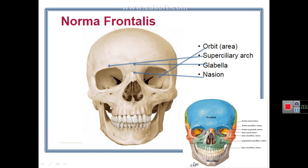The bones forming the norma frontalis are the frontal bone (a single bone), the right and left zygomatic bones, the right and left maxillae, the right and left nasal bones, and the mandible. To study features of the norma frontalis, we divide it into the forehead region, the region of the orbital opening, the region of the nasal opening, and the lower face.